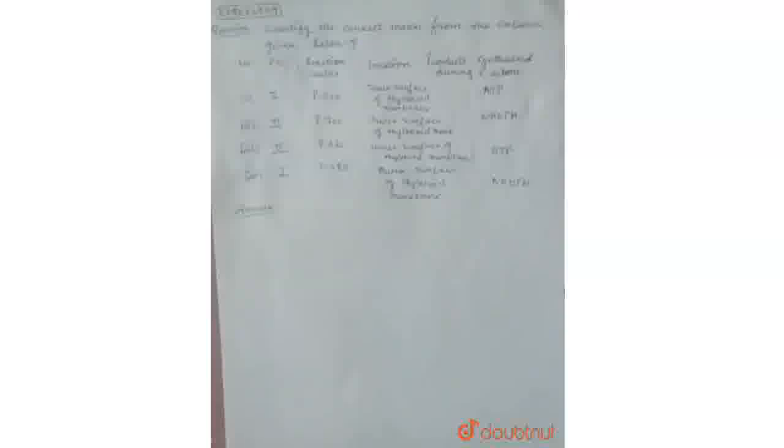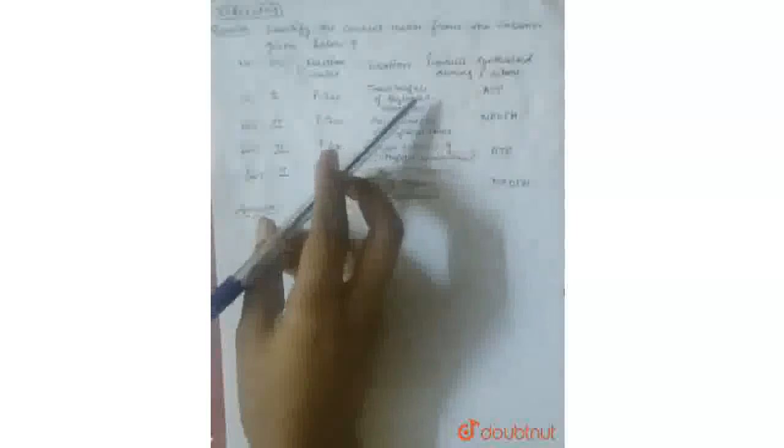Here are the options and we have to find for the given photosystem first and second, which is the correct reaction center, which is the correct location, and the product synthesized during the Z-scheme. So let's begin.